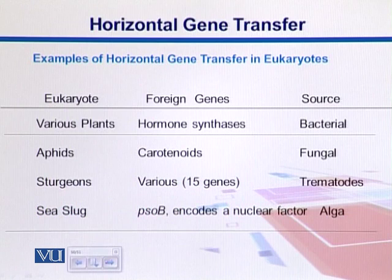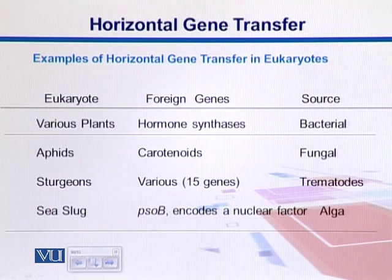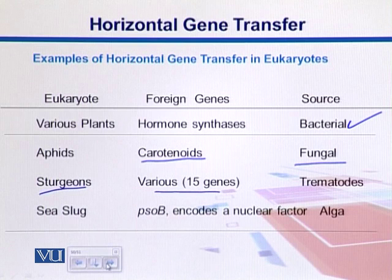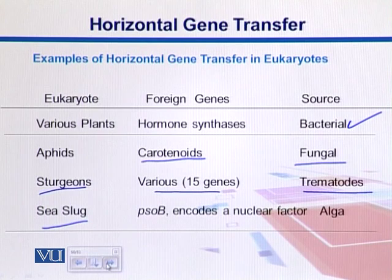Here is another example of horizontal gene transfer in eukaryotes. Different plants have a hormone synthase gene suspected to be coming from bacteria. Aphids, as insects, have carotenoids whose origin may be fungal. Sturgeons have about 15 genes coming from trematodes. Sea slugs have PSOB, which actually encodes a nuclear factor, and the source is some alga.